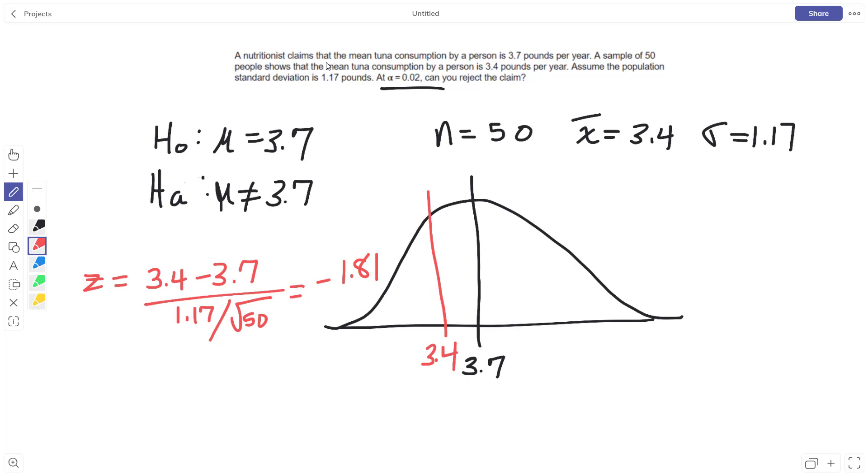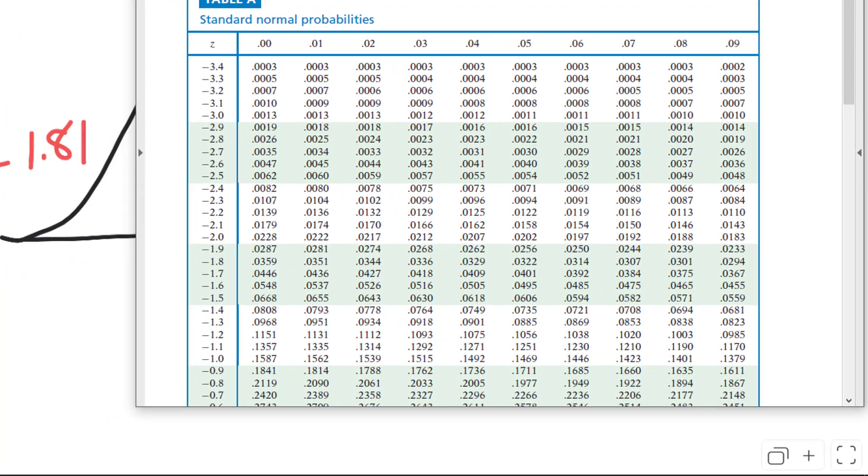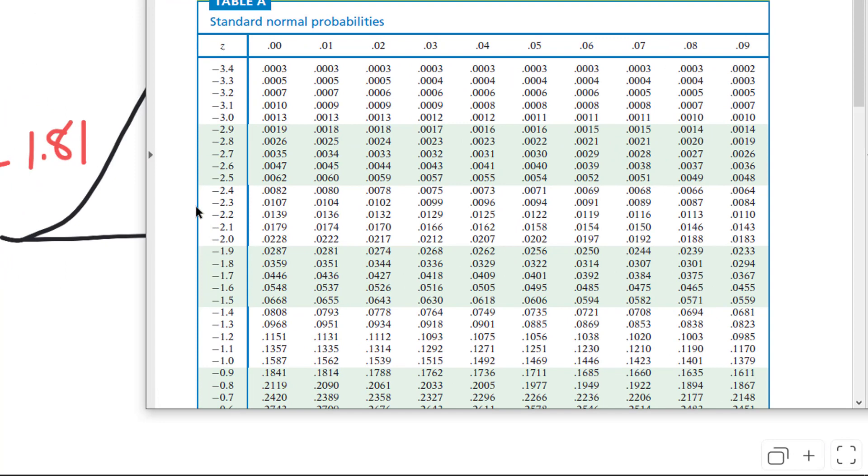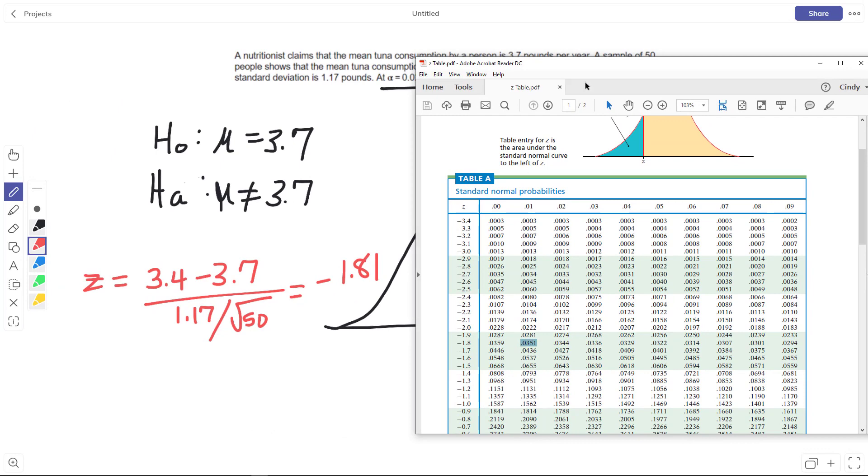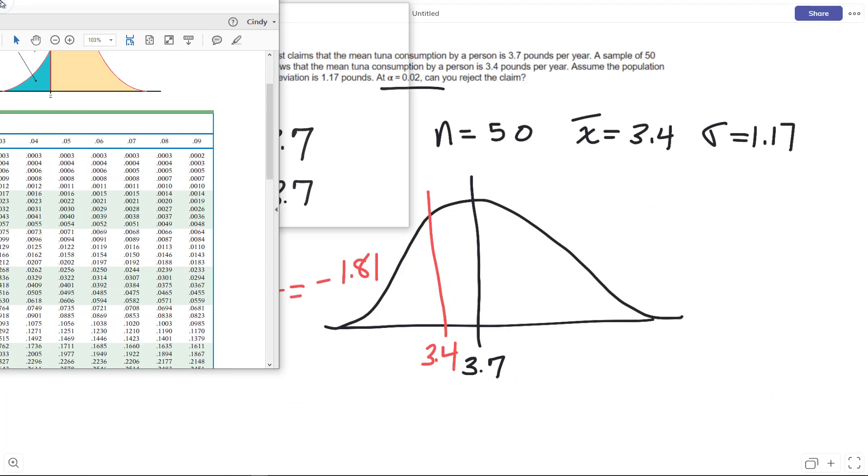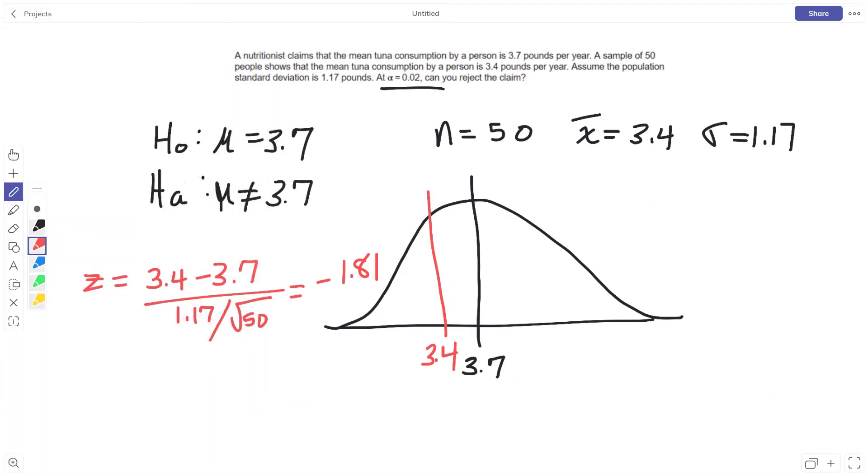I want to know is negative 1.81 too far. What could I do? Well, I could find the p-value and check it against alpha 0.02. So I get my nice little table here by negative 1.81, and I get 0.0351.